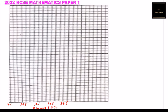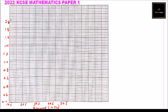On the vertical axis — the y-axis — we start with 0.0 and go up in steps of 0.2: 0.2, 0.4, 0.6, 0.8, 1.0, 1.2, 1.4, 1.6, 1.8, and 2.0. This axis represents the frequency density.